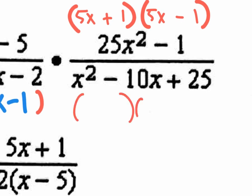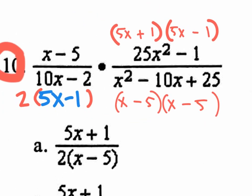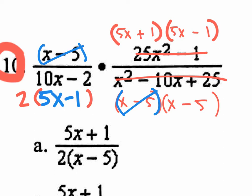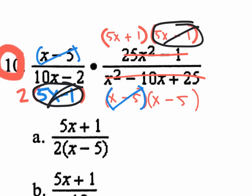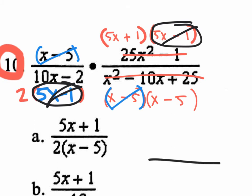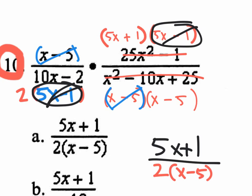Now factor the bottom: it's a binomial times a binomial, X times X. What times what equals 25 that if added together gives −10? That's −5 times −5. So the bottom factors as (X − 5)(X − 5). Cancel X − 5 on top with X − 5 on the bottom — those are gone. Cancel 5X − 1 on top with 5X − 1 on the bottom — those are gone too. What's left: 5X + 1 on top and 2(X − 5) on the bottom. That's option A.